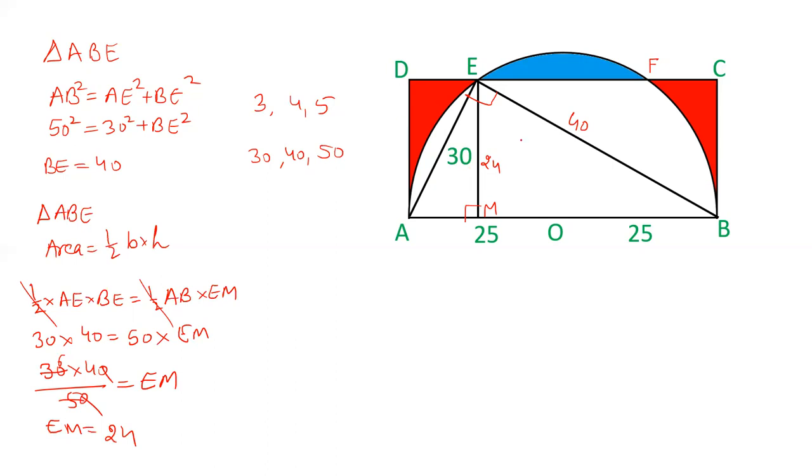EM and AD and BC all are equal. The reason is they are the distance between parallel lines AB and CD, and therefore all of these sides are equal. So AD is 24, BC is 24, and both are equal to EM.